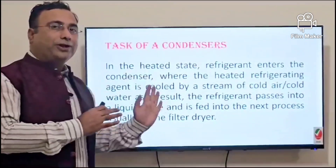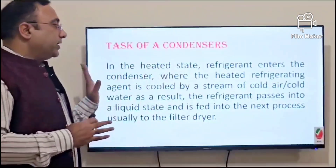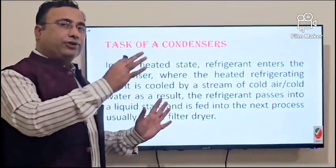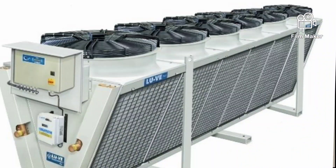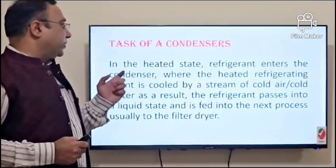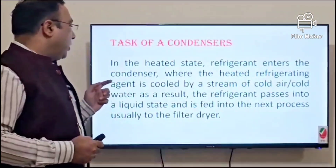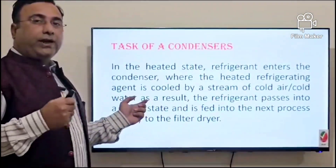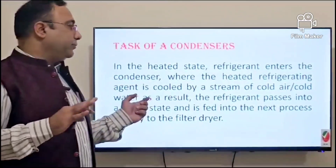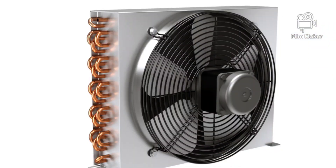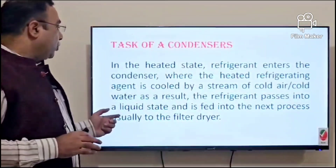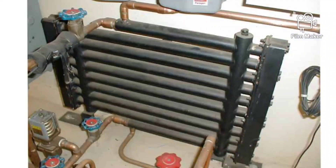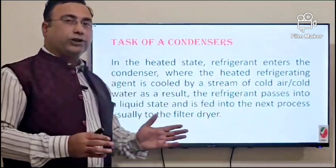The third important part of the chiller is the condenser. In the cycle — evaporator, compressor, and condenser — the condenser's main job is to remove heat from the refrigerating medium. The refrigerating agent is cooled by a stream of cold air, steam, or water. All three can be used to remove energy from the refrigerant.